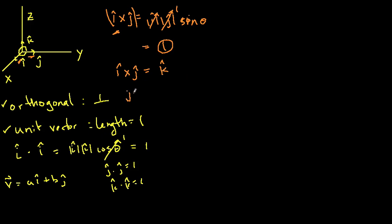Similarly, j-hat cross k-hat gives i-hat, and k-hat cross i-hat equals j-hat. So those are also interesting properties of the base vectors.